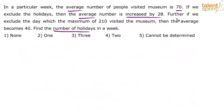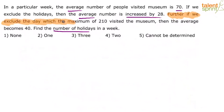There is more data given: if we exclude the day on which the maximum of 210 visited, then the average becomes 40. In my view, that statement is redundant — this part of the question is not really needed. A simple mental calculation will help you understand that the answer is option 4.